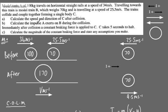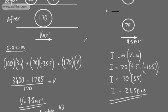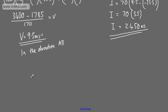Immediately after the collision, a constant braking force is applied to C. C takes 5 seconds to halt. In Part C, we're asked to calculate the magnitude of the constant braking force and state any assumptions. The assumptions I'm going to make are that we're modelling this as a particle and there is no friction. Stating these assumptions clearly will typically earn you 1 mark in the exam.